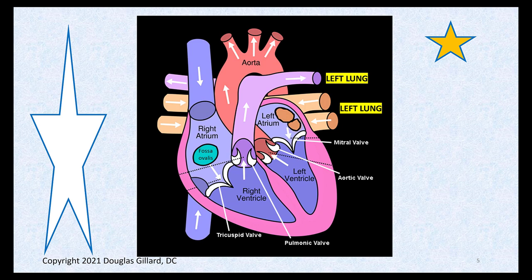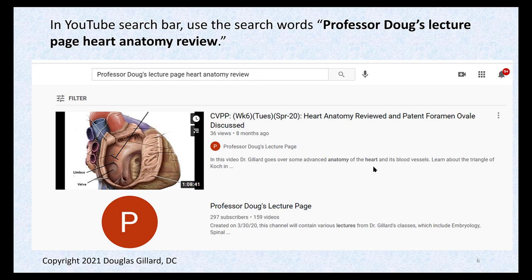Blood passes through the mitral valve into the left ventricle. Ventricular systole occurs, goes through the aortic valve - we've talked a lot about the aortic valve. Up the ascending aorta - we learned the types of dissecting aneurysms, DeBakey one, two, three, Stanford A and B - around the horn and down the descending aorta. Make sure you know that. Here's another video I did that you can find on Professor Doug's lecture page.